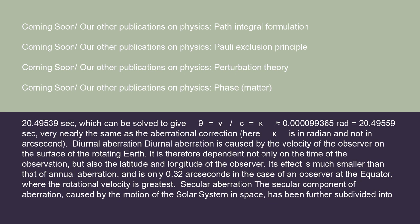Diurnal aberration is caused by the velocity of the observer on the surface of the rotating Earth. It is therefore dependent not only on the time of the observation, but also the latitude and longitude of the observer. Its effect is much smaller than that of annual aberration and is only 0.32 arc seconds in the case of an observer at the equator, where the rotational velocity is greatest.